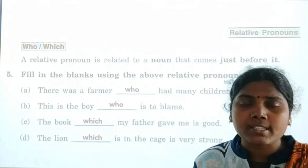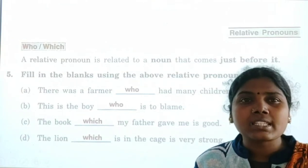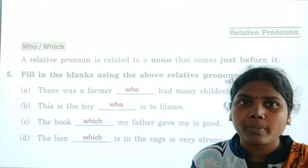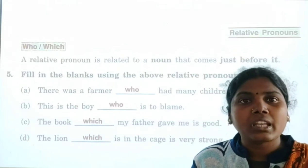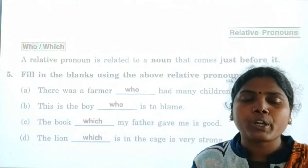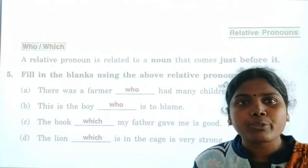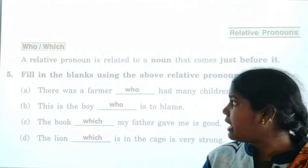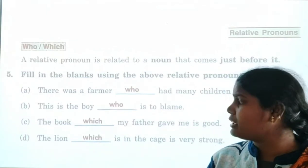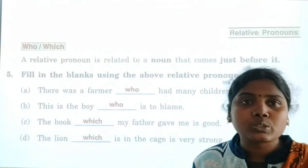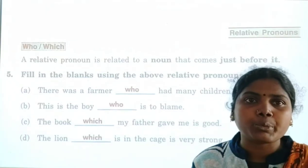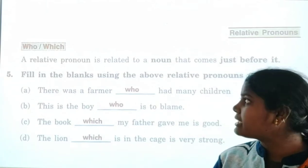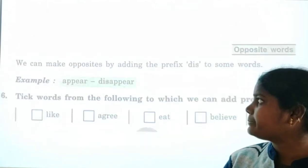A relative pronoun is related to the noun, and we always write it before the noun. Here we learned two relative pronouns: 'who' and 'which.'